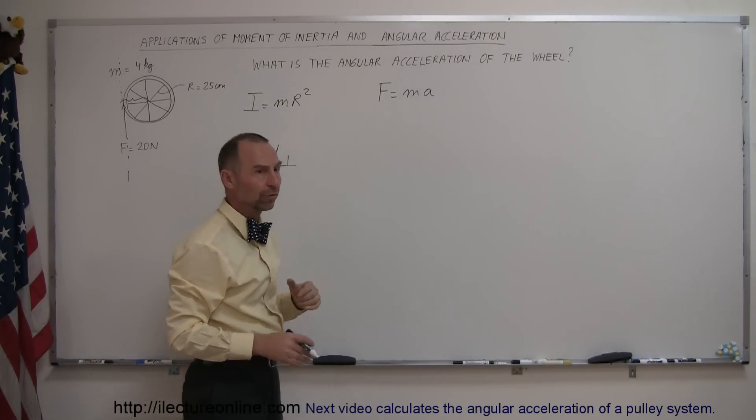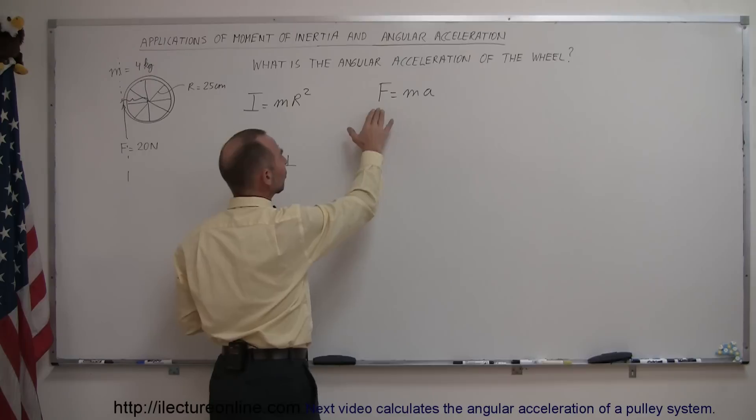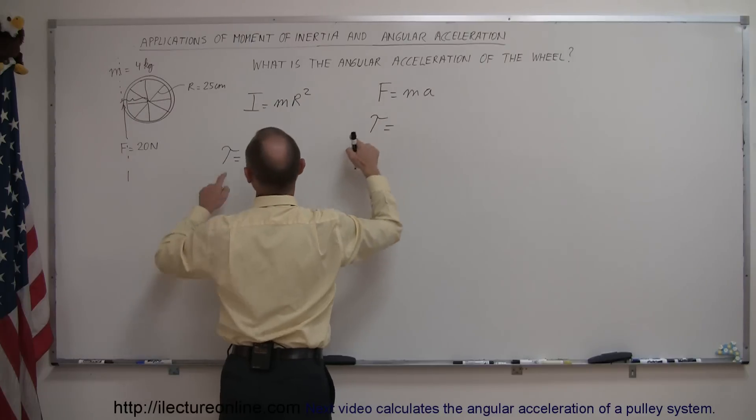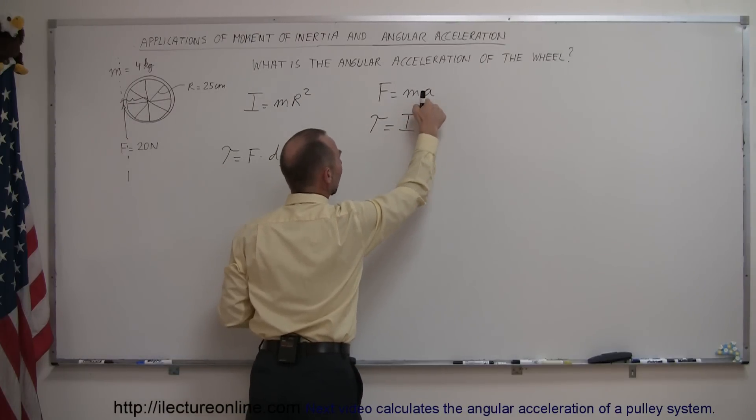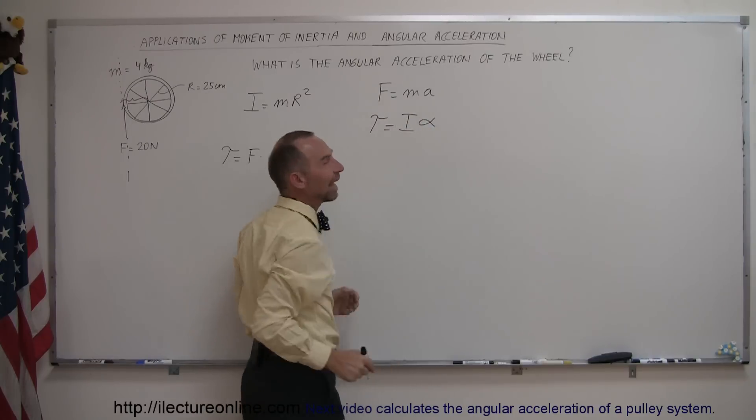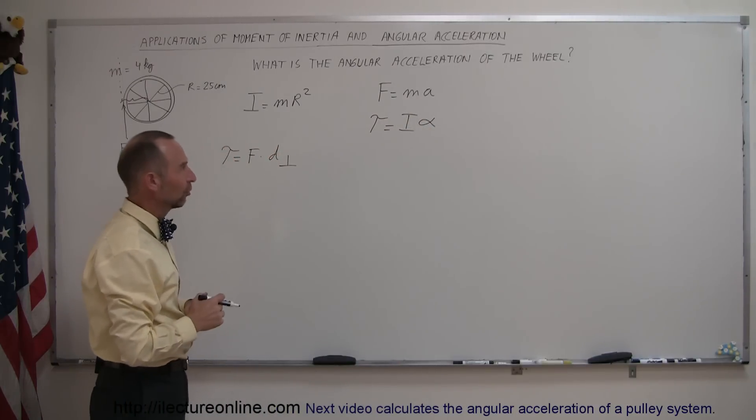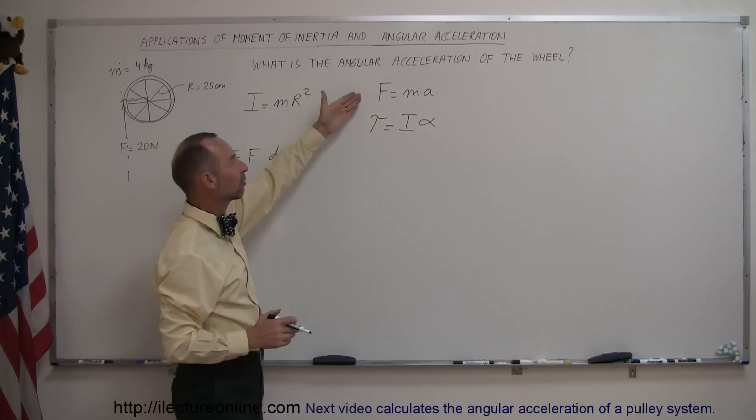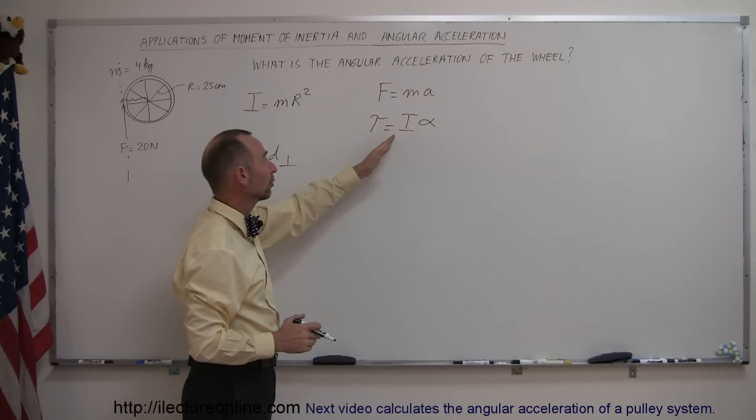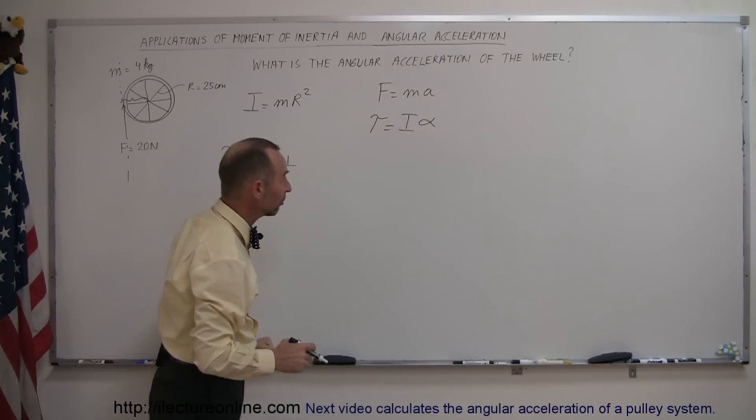can also be expressed in terms of angular motion. This is, of course, for linear motion, but for angular motion, we replace the force by the torque and replace the mass by the moment of inertia and replace the linear acceleration by angular acceleration. So F equals ma can be expressed in terms of rotational motion as well, and then it becomes the torque equals the moment of inertia times the angular acceleration.